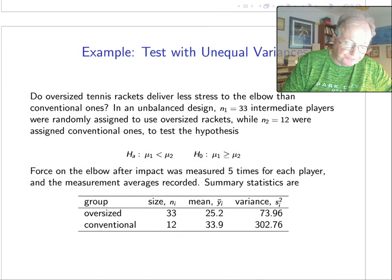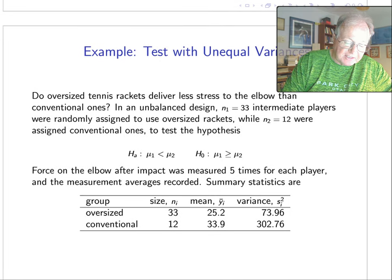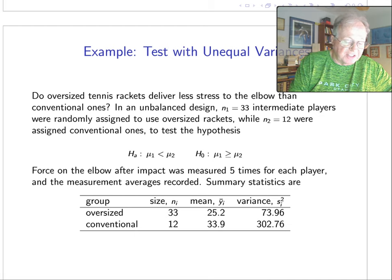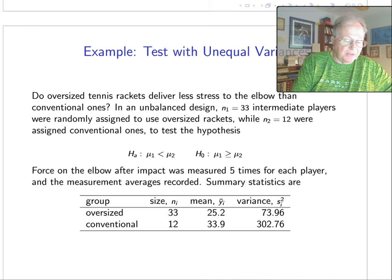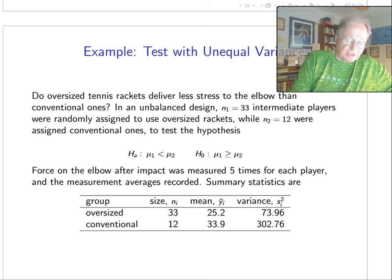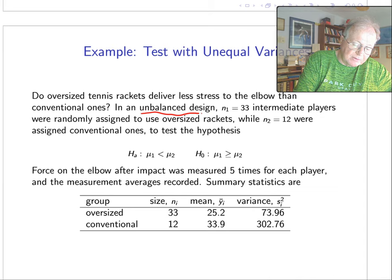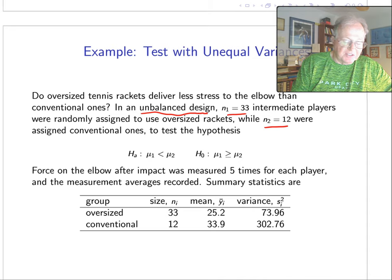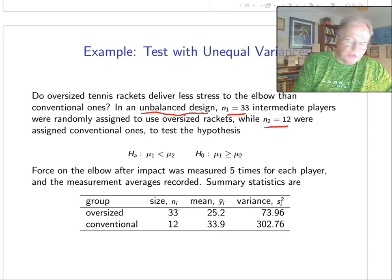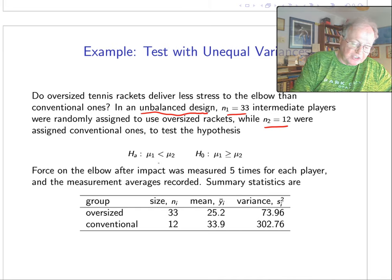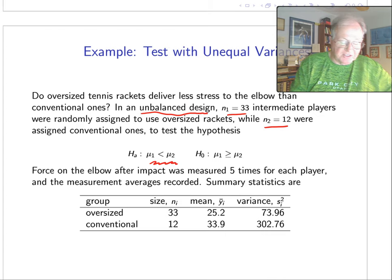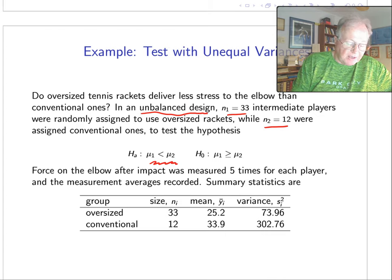So let's look at an example. Somebody doesn't like getting tennis elbow, so they asked the question: do oversized tennis rackets deliver less stress to the elbow than conventional ones? So we wanted to look closely at oversized rackets. We had an unbalanced design, simply meaning that the two sample sizes are different. Thirty-three intermediate players were randomly assigned to use oversized rackets while 12 were assigned conventional ones, and we wanted to test this hypothesis. Okay, so less stress for the oversized rackets—that's our research hypothesis.